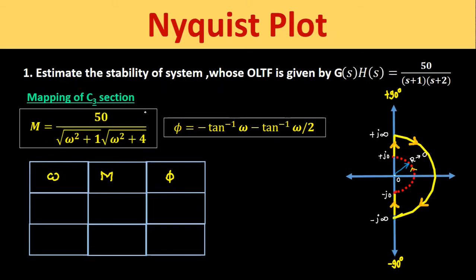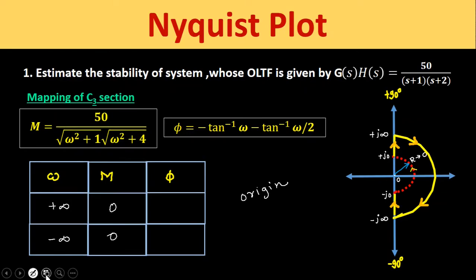For the C3 section, as discussed in the previous lecture, whenever the Nyquist path goes from +j∞ to −j∞ (i.e., ω from +∞ to −∞), the section is mapped as a point at the origin. Substituting infinity into the magnitude equation gives 0, so C3 is mapped as the origin.